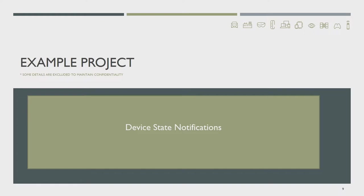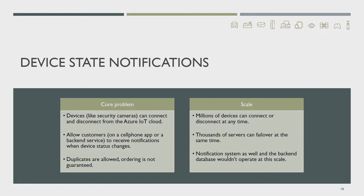Now let us talk about a concrete project — a real example where we use TLA Plus. Let's iterate over the design and see what TLA Plus catches and how we find a better design. The problem statement is simple: when a device connects to the cloud, it is online; when it disconnects, it is offline. Customers want to know when a device is online or offline. We wanted to send them notifications through a notification system. Notifications could arrive out of order, so we wanted to add a sequence number. Dedup was handled by the underlying system, so we were allowed to send duplicates.